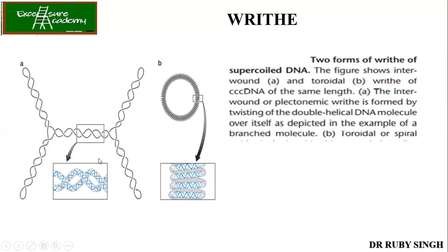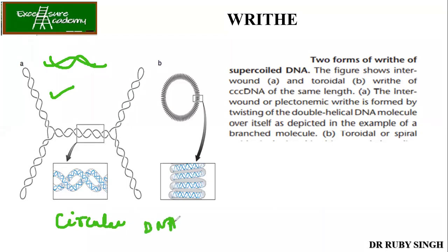Writhe can be of two types. The first form is called interwound or plectonemic writhe, in which the long axis twists around itself. The second form is toroidal or spiral writhe, in which the long axis is wound in a cylindrical manner. In the interwound form, you can count the crossings — the circular DNA twists on itself, and you can count approximately 30 writhe crossings.